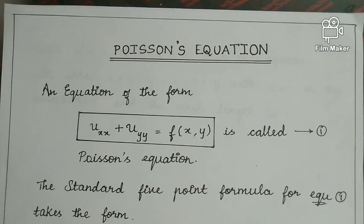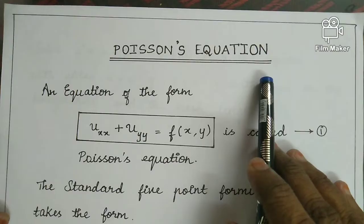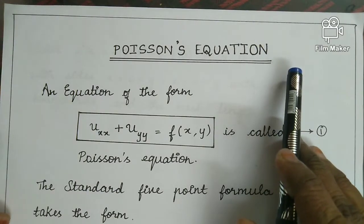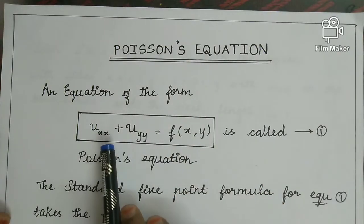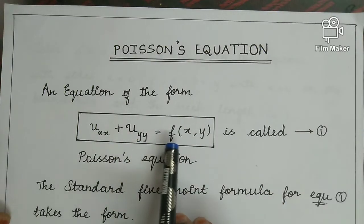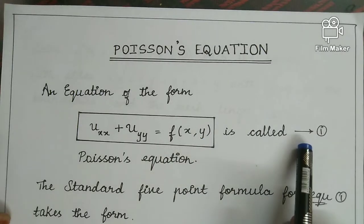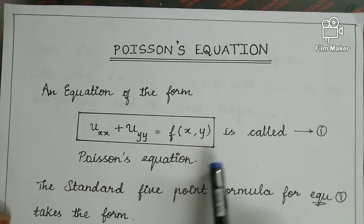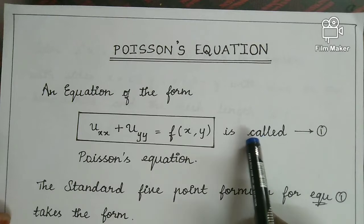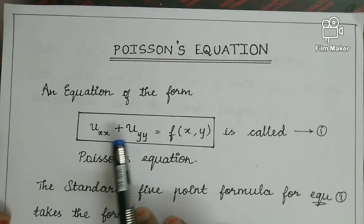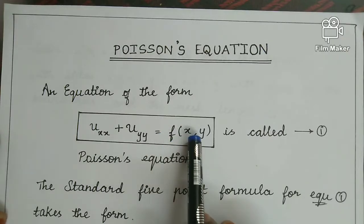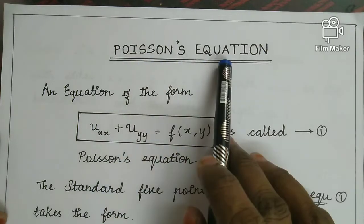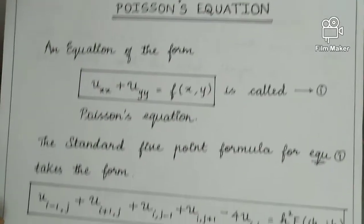Welcome to the lecture series on Numerical Methods. In this lecture we will learn about Poisson's equation. Previously we studied the Laplace equation, where uxx plus uyy equals zero. An equation of the form uxx plus uyy equal to f(x,y) is called Poisson's equation. The difference between Poisson's and Laplace equation is that the right-hand side is a function of x and y in Poisson's equation.